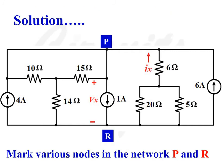The first step is to mark the nodes present in this network. Here there are two nodes marked: node P and node R. This network consists of three current sources — 4A and 6A pointing towards node P, and 1A pointing towards node R. All three current sources are connected between node P and node R, meaning they are connected in shunt.